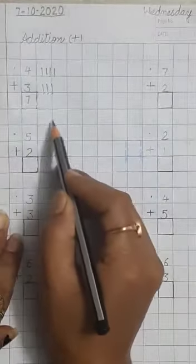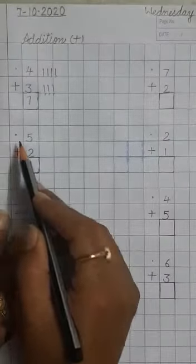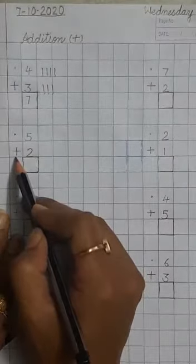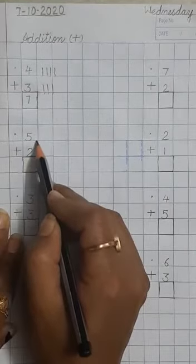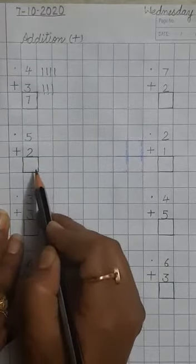Now leave a box here. Put a dot here. Write number 5. Then make a sign of plus here. Write number 2 just below 5. Draw a box like this.